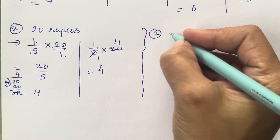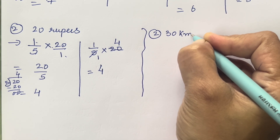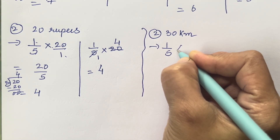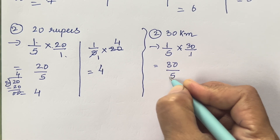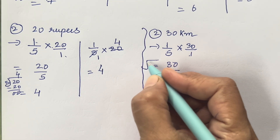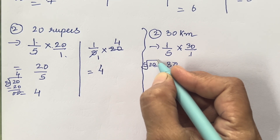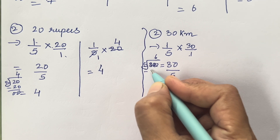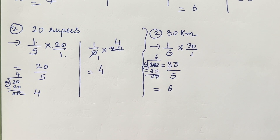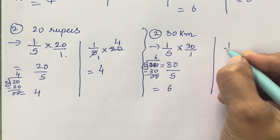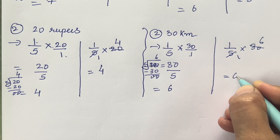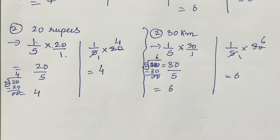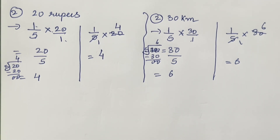Second one: 30 kilometers. So 1/5 into 30 — 1 into 30 is 30, 5 into 1 is 5. Divide: 5 sixes are 30, so your answer is 6. Or using the shortcut: 1/5 into 30 — 5 ones are 5, 5 sixes are 30 — answer is 6. This method is very useful and you will need it in the future, so try to learn it.